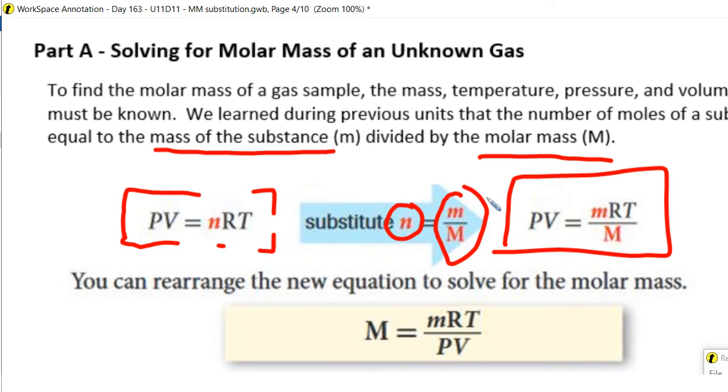And because we're going to use this equation typically to solve for molar mass, algebraically we can rearrange this and get capital M molar mass by itself. And so algebraically we can switch that around and we get this equation here. So the molar mass of a gas is equal to little m, the mass, how many grams of the gas we have,